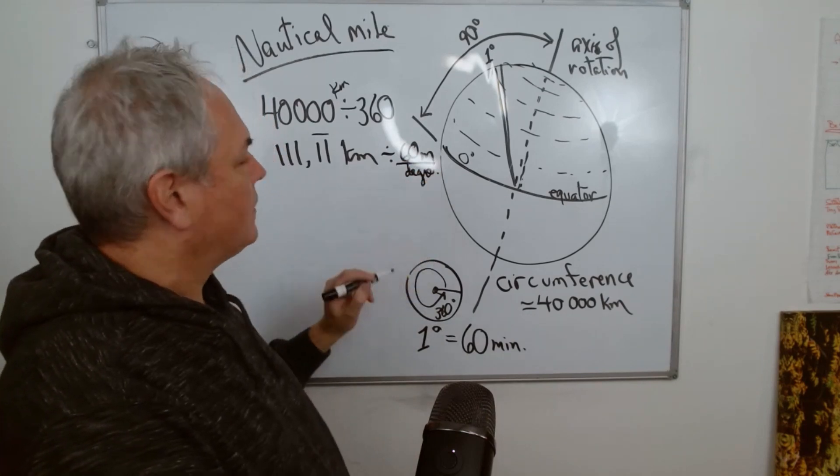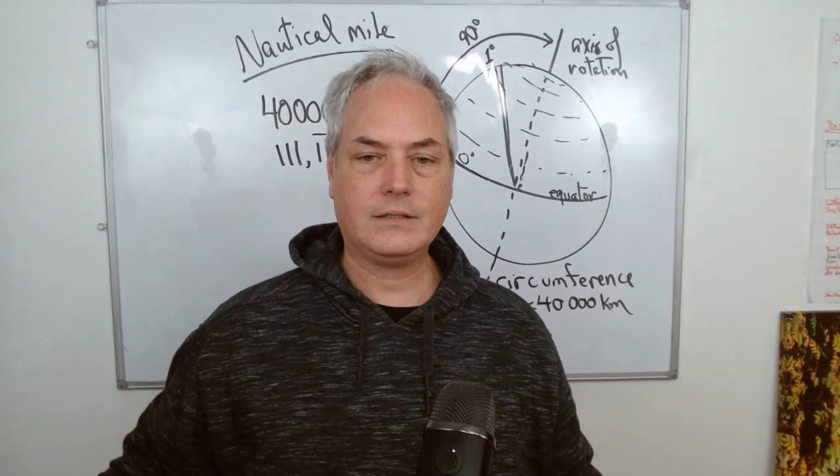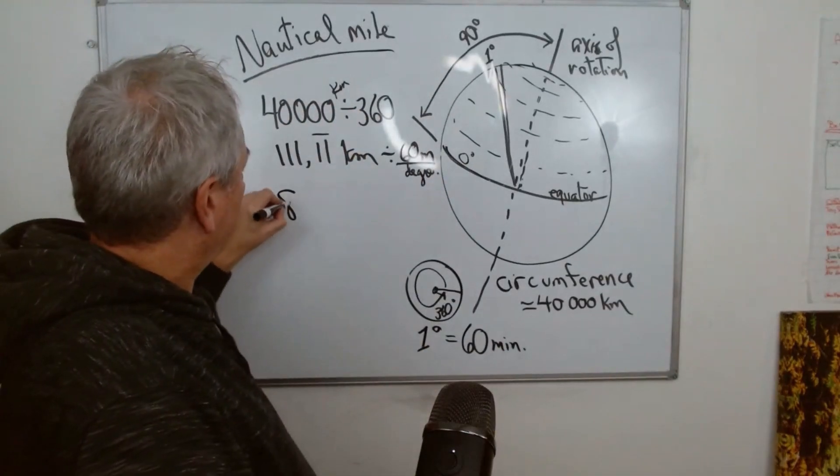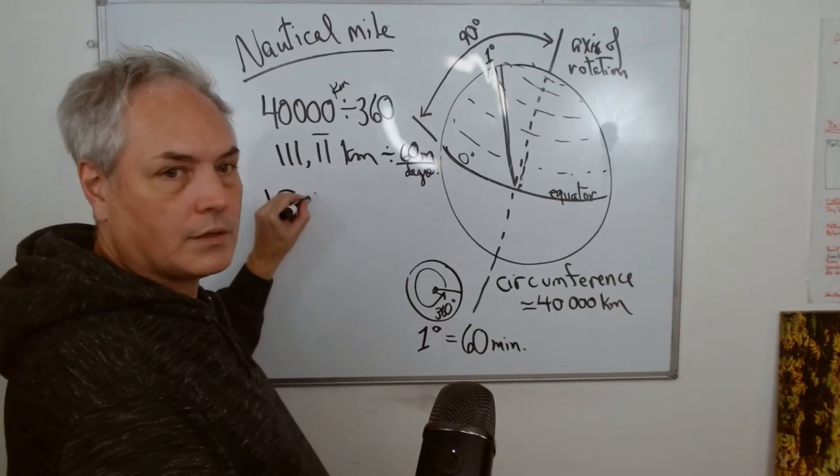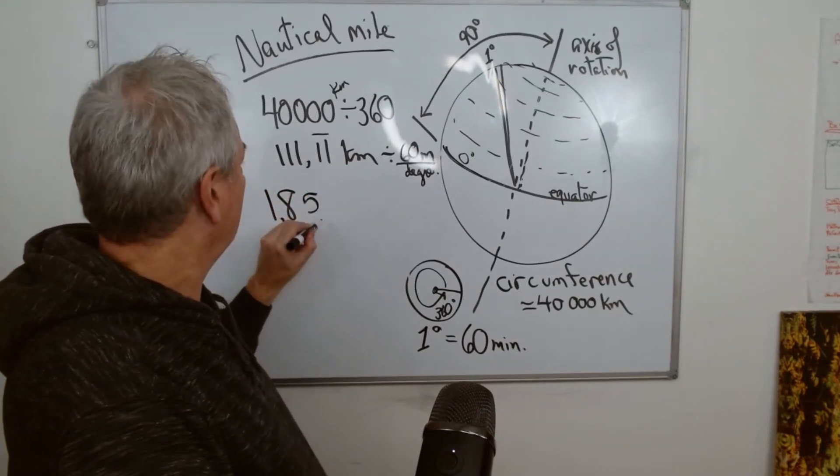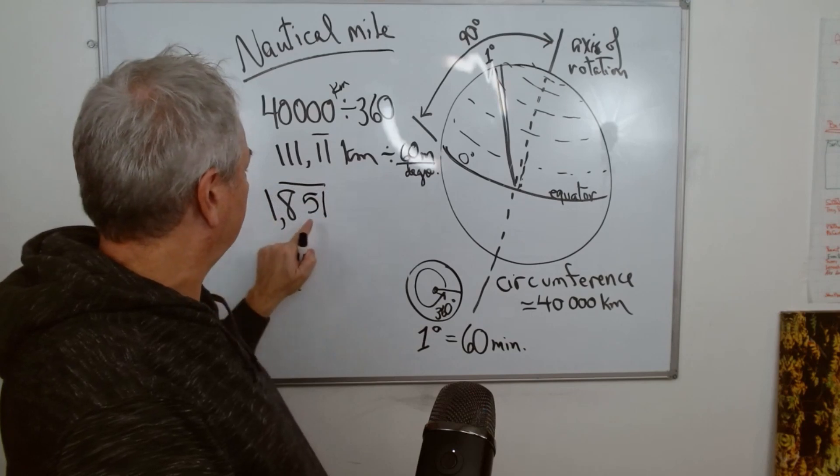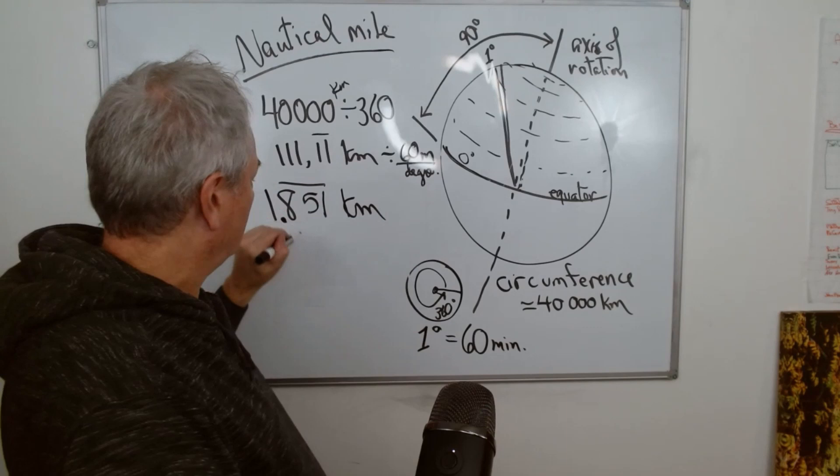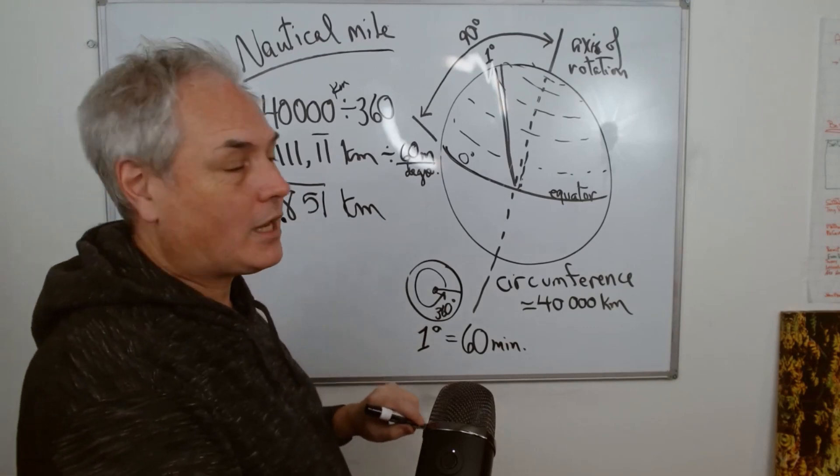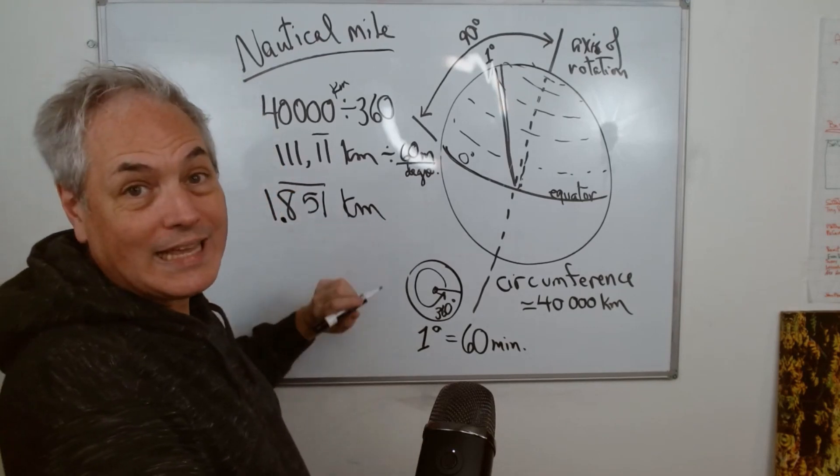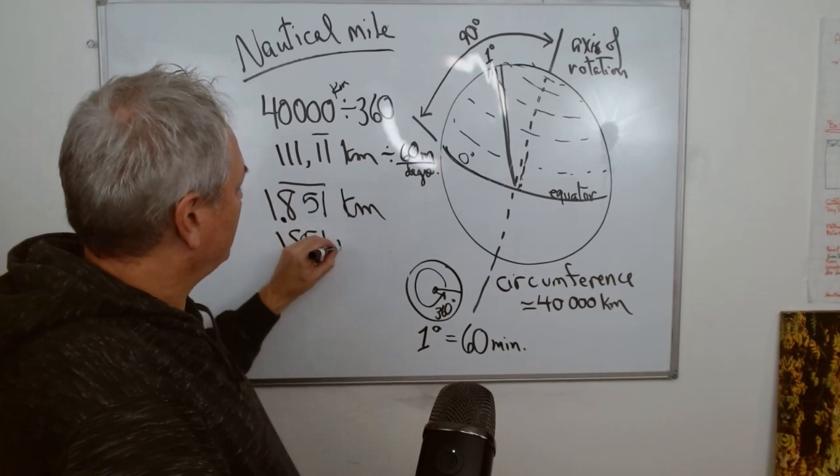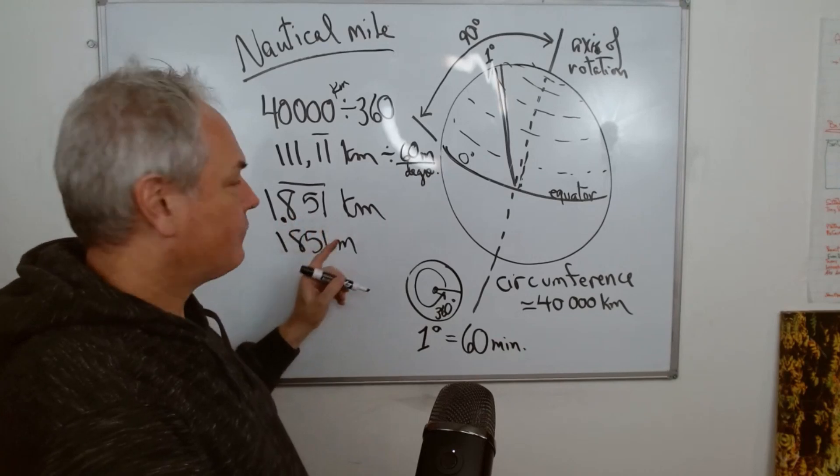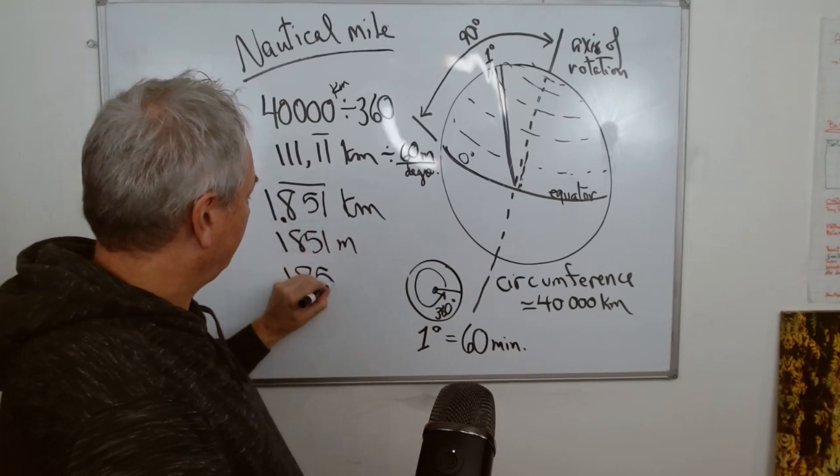Let's see, I'll take my calculator again, divide it by 60, and I end up with 1.851 kilometers. If we put this in meters, that's 1,851 meters, and because it's repeated 851, we have 1,852 meters.